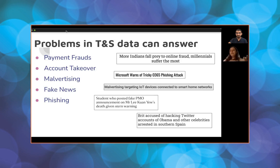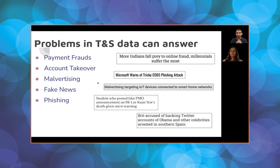These are the broad categories across different domains — fake news uses content, account takeover is in terms of accounts, and payment fraud is monetary. The bigger the product, the more domains it will have to penetrate and cause issues for users. Every day the technology is improving, but fraudsters are also getting better at their work. Google has multiple verticals where all of these problems are applicable, but if someone's working in fintech, payment fraud or account takeover might be more relevant than fake news or phishing.